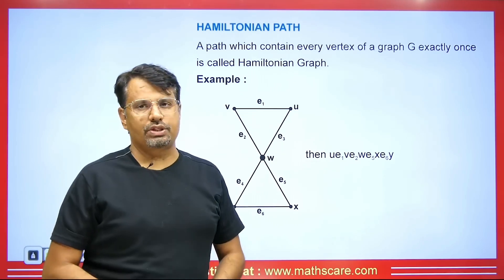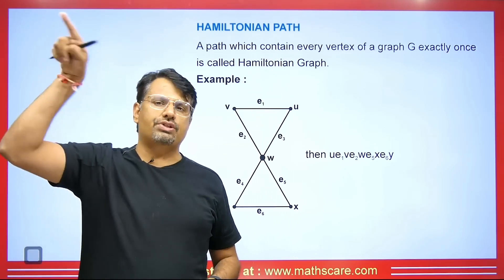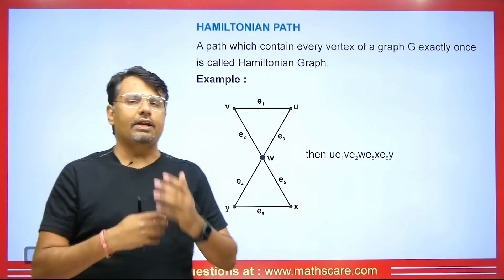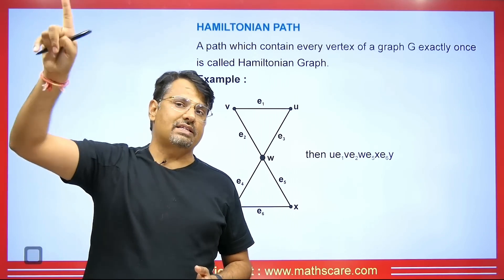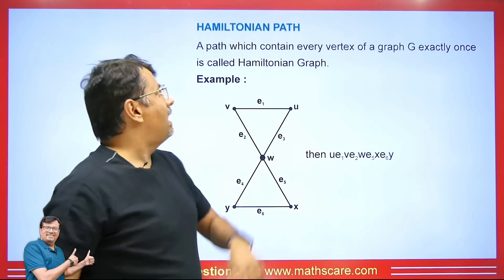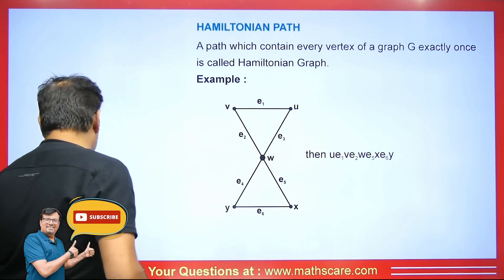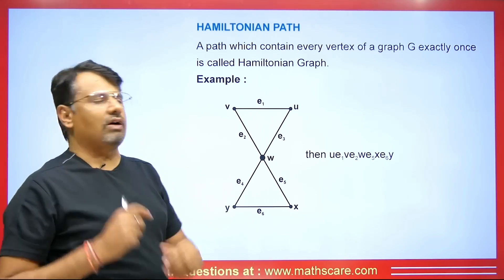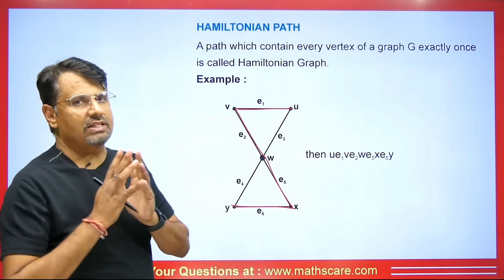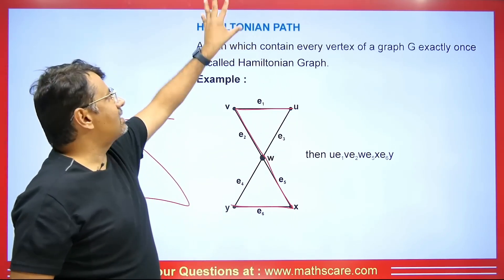Now let's talk about what is a Hamiltonian path. A path which contains every vertex of graph G exactly once is called a Hamiltonian path. The difference between Eulerian and Hamiltonian: in Eulerian the edges should not repeat and all edges should be covered once; in Hamiltonian the vertices should not repeat and all vertices should be covered. For example, taking U, Y, W, X, V — all these are vertices covered once — so this is a Hamiltonian path.